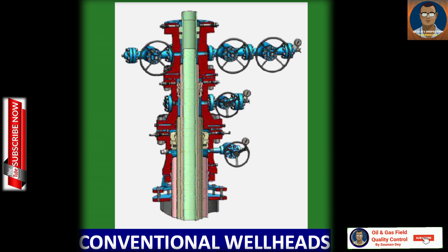There are basically three types of wellheads: conventional wellheads, compact wellheads, and dual completions. The conventional flanged wellheads are for applications focused on simplicity of installation, reliable field-proven design, low investment, standard procedures and parts that are well known to all rig crews.